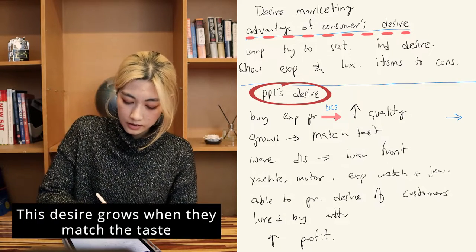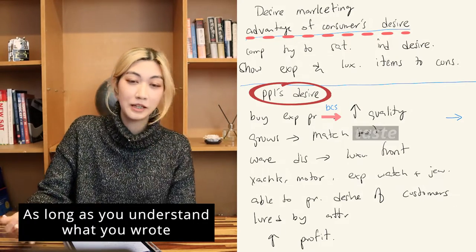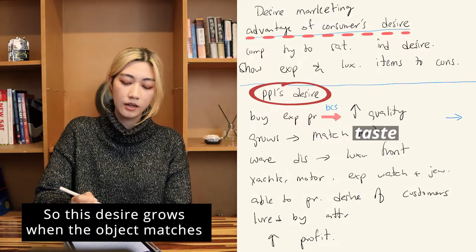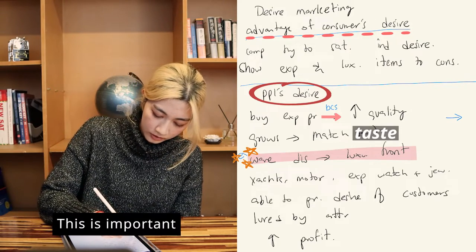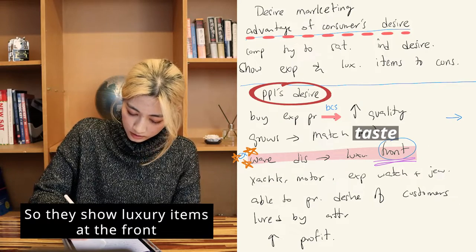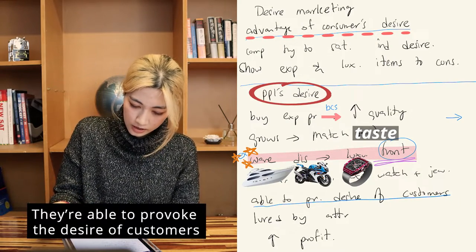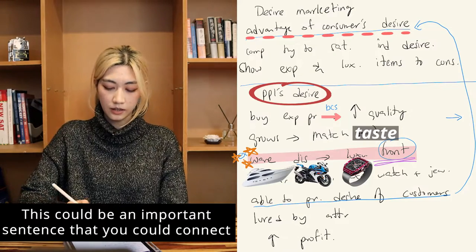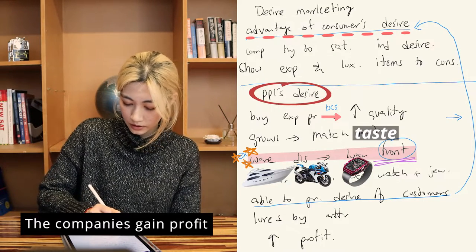Moving to the next part: this desire grows when the product matches the consumer's taste. The example given — which is important — was warehouse discount stores. They show luxury items at the front, and due to this they provoke the desire of customers. This connects back to the reading passage: while customers are lured by the attractions, the companies gain profit. This is how the lecture developed.